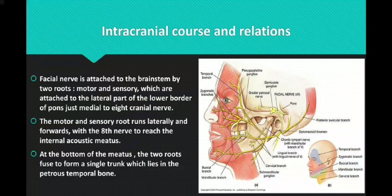Coming to the intracranial course: the facial nerve is attached to the brain stem by two roots, motor and sensory, which are attached to the lateral part of the lower border of the pons, just medial to the eighth cranial nerve, the vestibulocochlear nerve. The motor and sensory roots run laterally and forward with the vestibulocochlear nerve to reach the internal acoustic meatus. At the bottom of the meatus, the two roots fuse to form a single trunk.